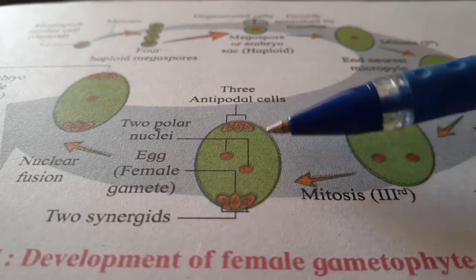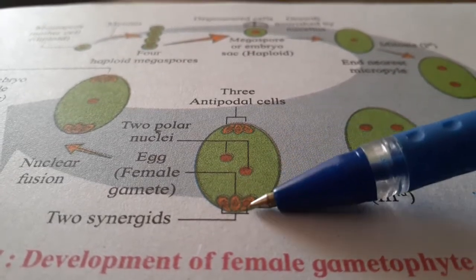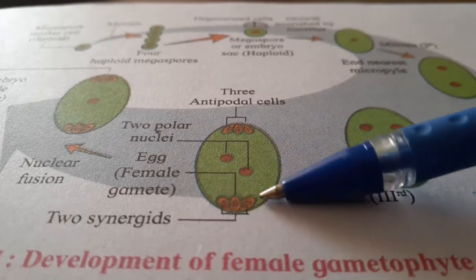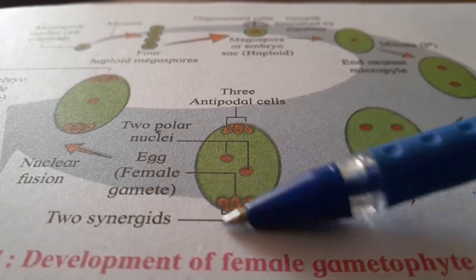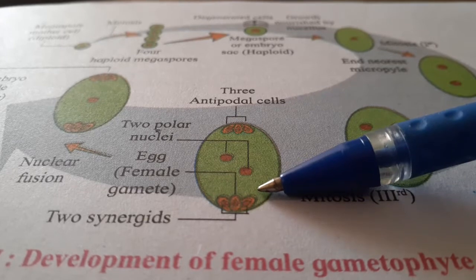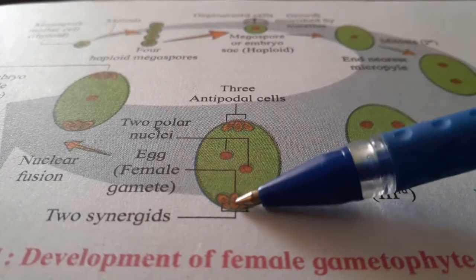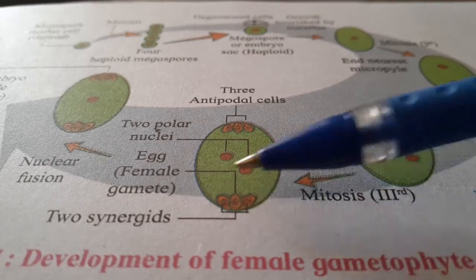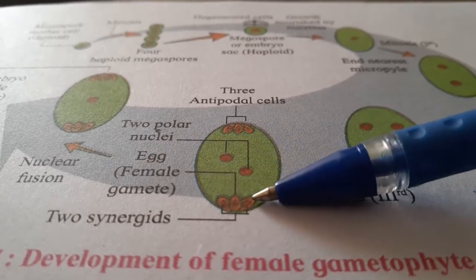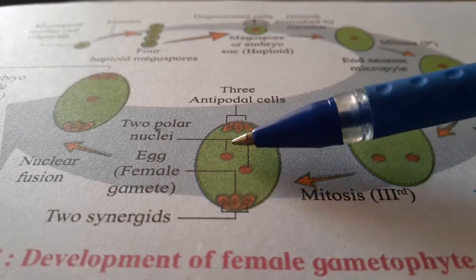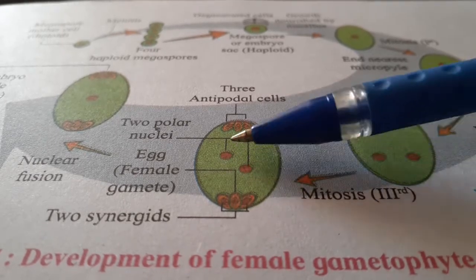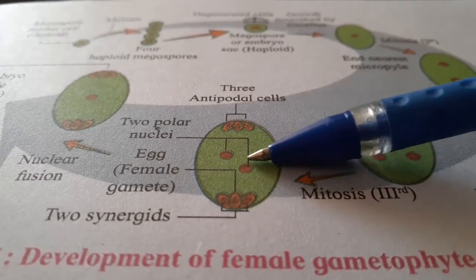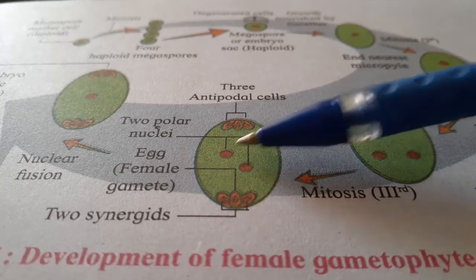Out of these 8 nuclei, the 3 near the micropyle are called the egg apparatus. The central large cell is called the egg cell, and the 2 cells on either side are called synergids. The 2 nuclei present at the centre are called polar nuclei.